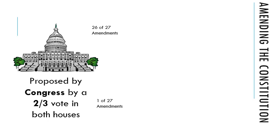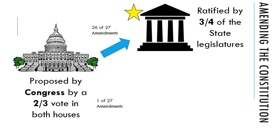There are four possible ways to amend the constitution. The first and most common: proposed by Congress by a two-thirds vote in both houses — the House of Representatives and the Senate — then ratified by three-quarters of the state legislatures. 26 of the 27 amendments have been done this way. An easy way to remember the numbers: think of a little hill first — two-thirds — and then a bigger mountain second — three-quarters of state legislatures.